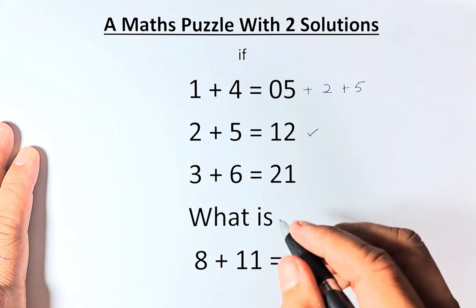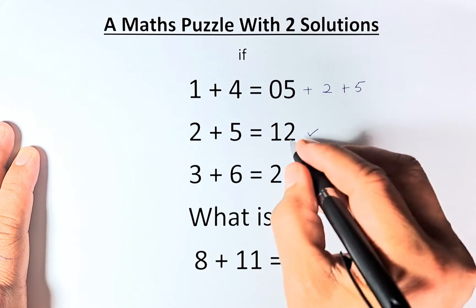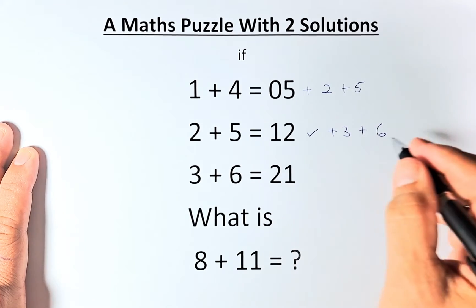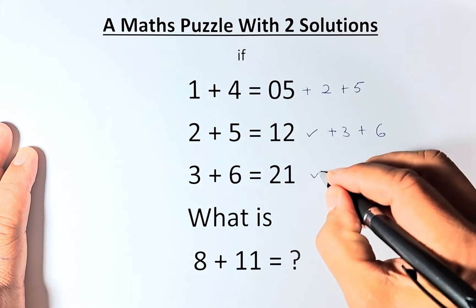To get 12 to 21, we get the next two numbers. So 12 plus 3 plus 6, so 12 plus 3 is 15, 15 plus 6 is going to give you 21.